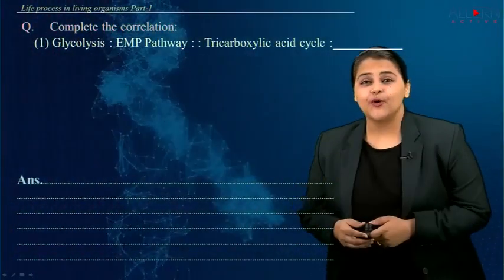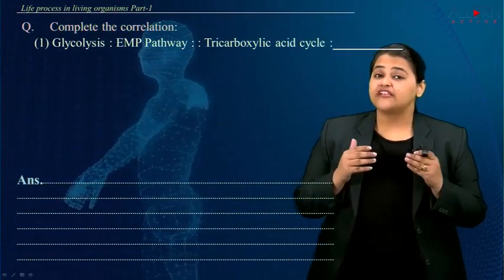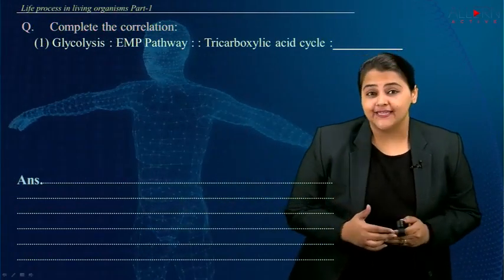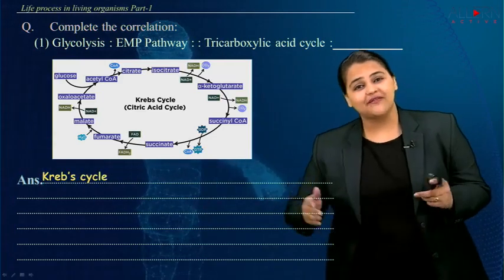Well, let's try to now complete the correlation. Glycolysis is EMP pathway, whereas tricarboxylic acid cycle will be called as the Krebs cycle. So the answer has to be Krebs cycle.